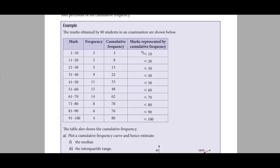So: students who got marks 10 and less are 3; students who got 20 and less are 8; students who got 30 and less are 13; students who got 50 and less are 33; and students who got 100 and less are 80. The total number of students was 80, and your end result must also be 80 — if it matches, your calculation is correct.